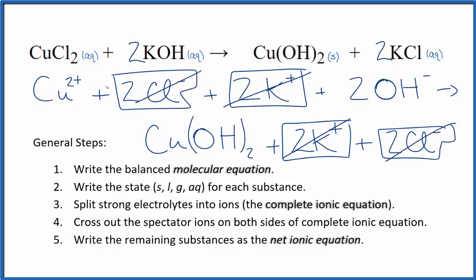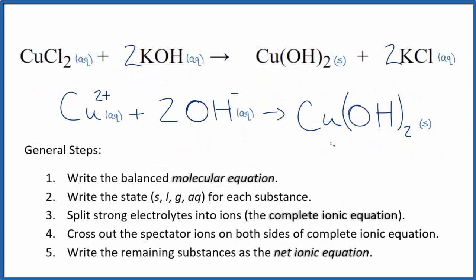What's left is the net ionic equation for CuCl2 plus KOH. I'll clean this up and write the states. So this is the balanced net ionic equation for copper 2 chloride plus potassium hydroxide.